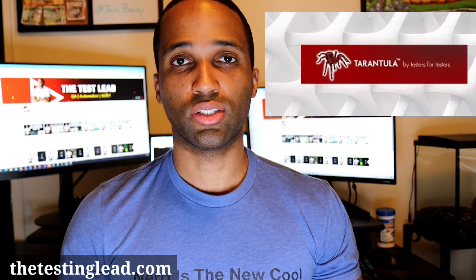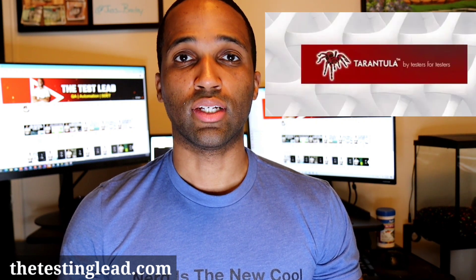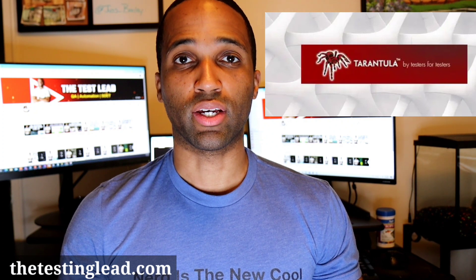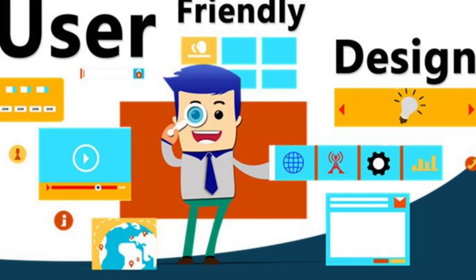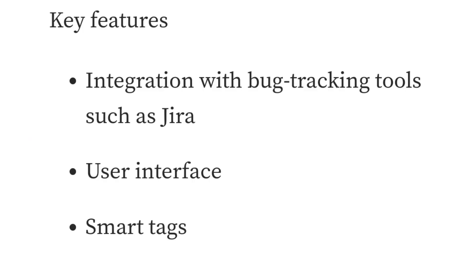And finally, last on our list, Tarantula. Tarantula is a test management tool created by Testia. The interface, or the way you interact with the application, is very user-friendly. The reporting tool lets the test and project managers keep track of test process progression. The key features for Tarantula include integration with bug tracking tools such as Jira, a friendly user interface, and smart tags.